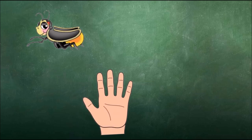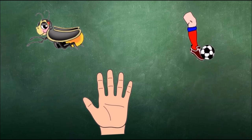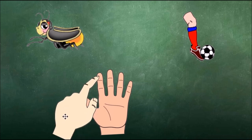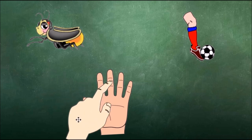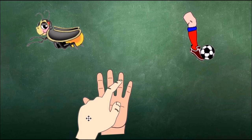Then, I would show another picture and follow the same process. What is this a picture of? Students respond with leg. We would show the sounds on our fingers: L-E-G. What is the last sound we hear in leg? Students respond with G.